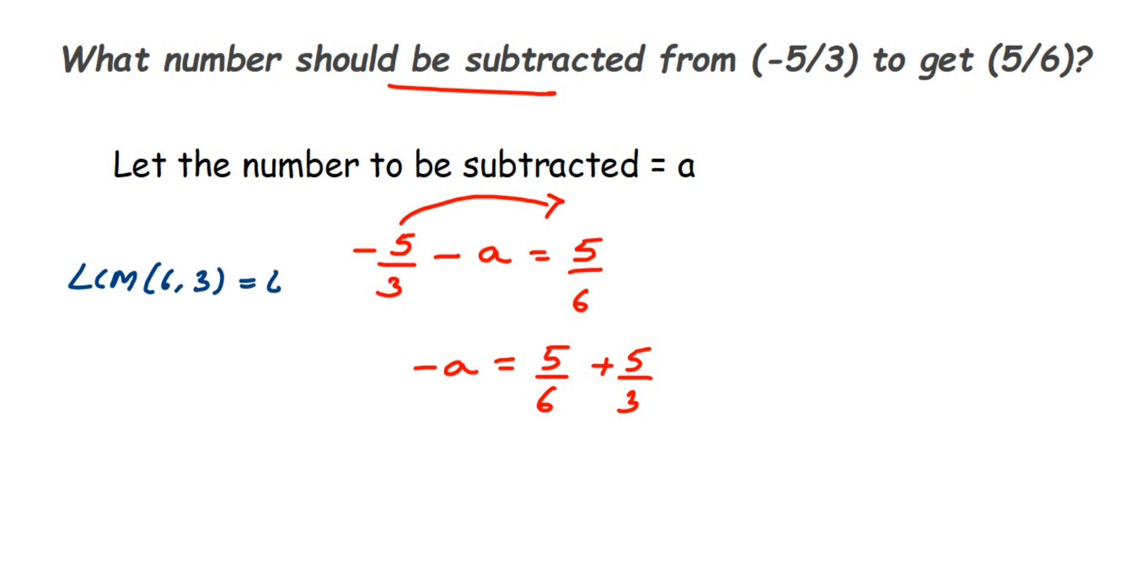Change the denominator of both numbers. So -a = ... for the first number we already have a 6, so we don't have to change anything, you can write it as 5/6. But for the second number we have to make it 6. I'm going to find the equivalent rational number of 5/3 with denominator 6. Multiply 3 with 2 to get 6, so multiply the numerator by 2 as well. So -a = 5/6 + 10/6.